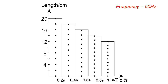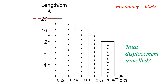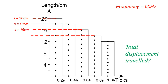First, we need to calculate the total displacement traveled. As you can see, for the first strip the displacement traveled is 20 cm. For the second, it's 18 cm. For the third, 16 cm. For the fourth, 14 cm, and the last one is 12 cm.